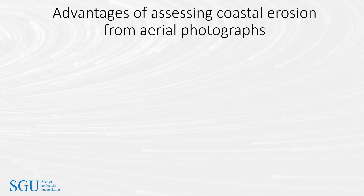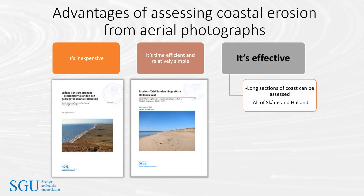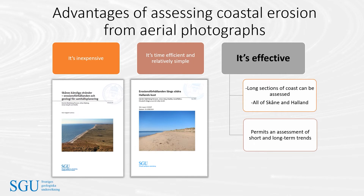There are a number of advantages of assessing coastal erosion from aerial photographs. It's cheap because it uses existing publicly available imagery and ArcGIS, which we already have a license for. It is quick and easy compared with detailed field surveys. Most importantly, it's effective because long sections of coast can be assessed — for example, we have done all of Skåne and Halland. It gives a record of change over years to decades, allowing assessment of both short-term and long-term trends. With high-resolution colour imagery, measurements can be done with high precision and accuracy.